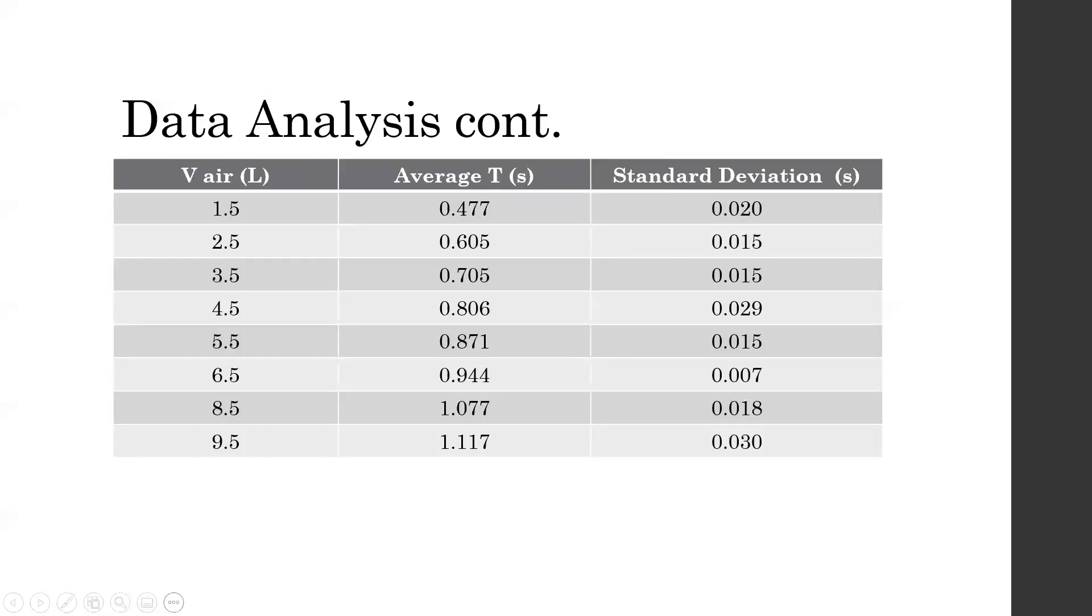It should be noted here that one data point is missing, the volume of air equal to 7.5 liters. The tracker data for this trial was somehow lost during the export to Excel, so it has been omitted from all calculations. These volume and period values were then used to obtain values for kappa.